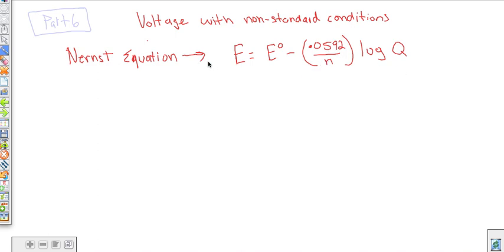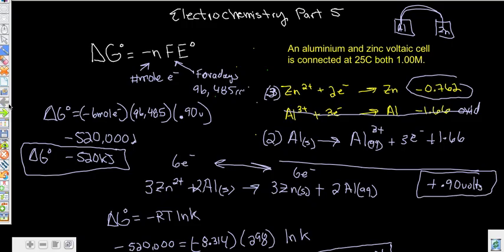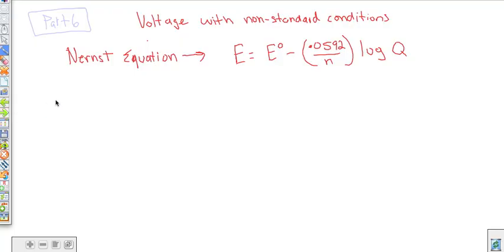So we just got done discussing what happens when you're looking for free energy and you have standard conditions right here. Well, what if you don't have standard conditions? How does that affect things? And what is the voltage going to be at a non-standard condition?